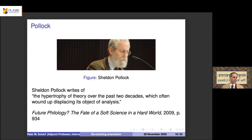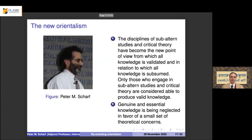All the new dissertations are engaged in this kind of theoretical work. The disciplines of subaltern studies and critical theory have become the new point of view from which all knowledge is validated. Only those who engage in these frameworks are considered able to produce valid knowledge, while genuine and essential scholarship is being neglected — and this is why we need to reorient orientalism.